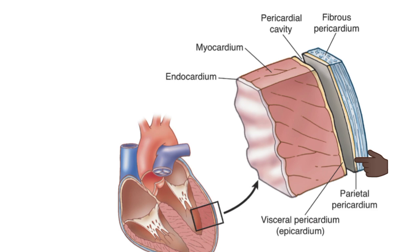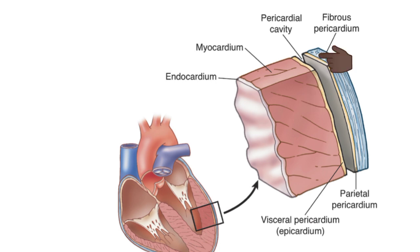The parietal pericardium is made up of two layers: the outer fibrous layer and the inner serous layer. The fibrous layer of the parietal pericardium is formed by thick fibrous connective tissue. It is attached to the diaphragm and is continuous with the tunica adventitia of the blood vessels. Because of its fibrous nature, it protects the heart from over-stretching. The serous layer is formed by mesothelium together with a small amount of connective tissue.